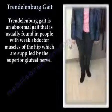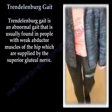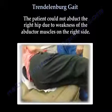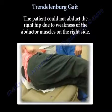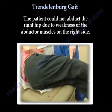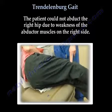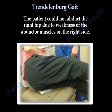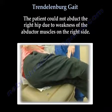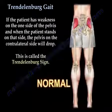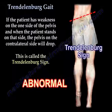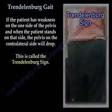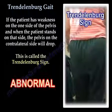Here you can see a patient example of Trendelenburg Gait. The patient could not abduct the right hip due to weakness of the abductor muscles on the right side. If the patient has weakness on one side of the pelvis and when the patient stands on that side, the pelvis on the contralateral side will drop. This is called the Trendelenburg sign.